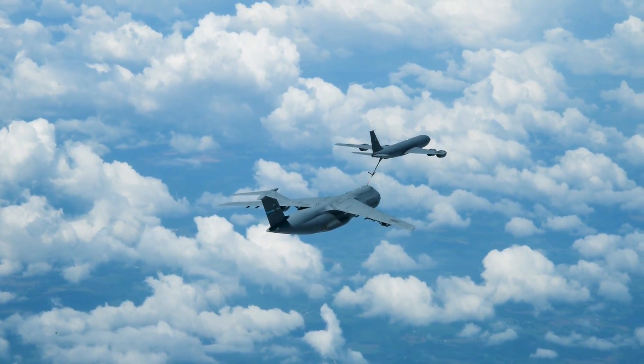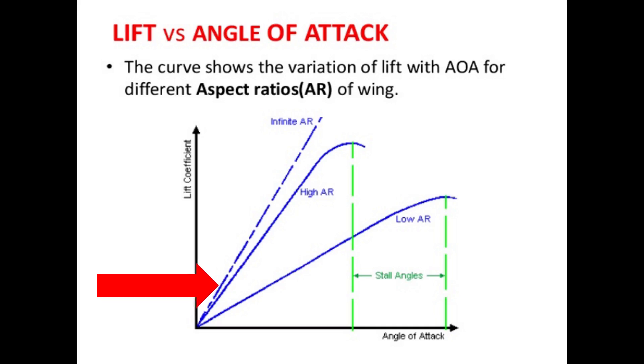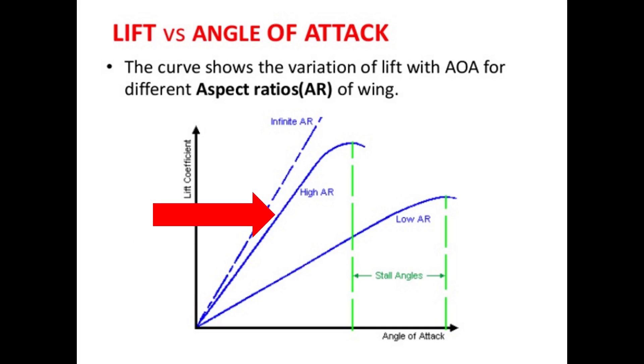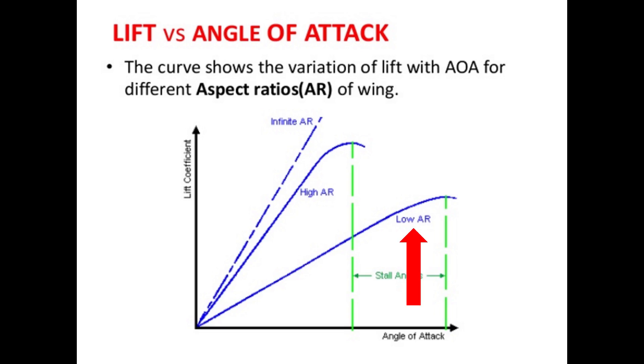Beyond the reduction of drag, these cargo planes use large aspect ratio wings to also increase the stability of the aircraft, which is intuitive because longer wings means the airplane is going to be more stable. Another benefit is that high aspect ratio wings are able to produce more lift at lower angles of attack. However, higher aspect ratio wings tend to have lower stall angles than low aspect ratio wings, as we can see on this graph.